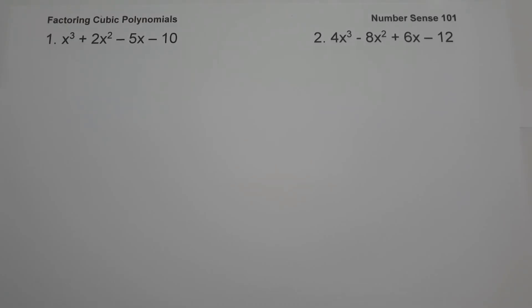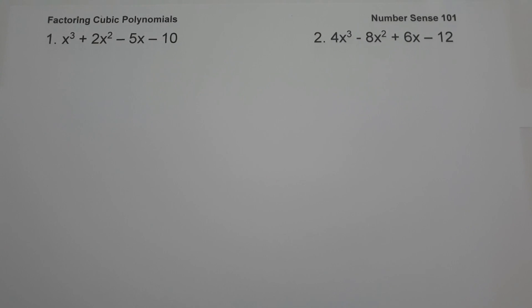For today's video, we are going to talk about factoring cubic polynomials and we are going to explain in detail how we get the answer. On the first example, we have x cubed plus 2x squared minus 5x minus 10. So how can we find the factors of the given polynomial? In factoring cubic polynomials, the first thing that we're going to do is to check whether the given polynomial can be solved using factoring by grouping.